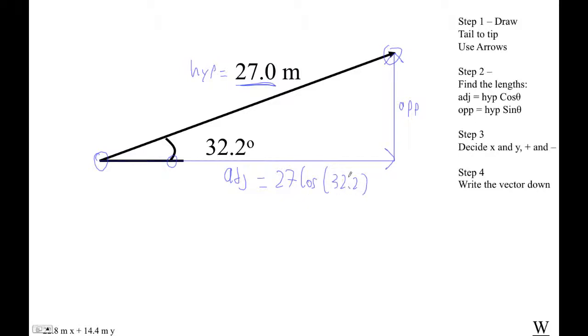27 cos 32.2. I'm getting 22.85. Okay, and that's meters.